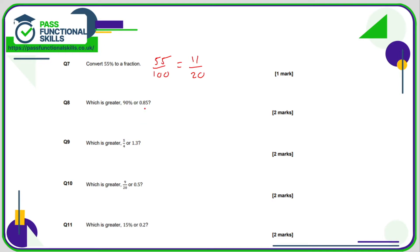Question eight, which is greater, 90% or 0.85? When you're comparing a mixture of fractions, decimals, and percentages, I always recommend converting everything into percentages. So let's turn this decimal into a percentage. 0.85 times by 100 is 85%, which is greater? 90% is definitely greater than 85%.